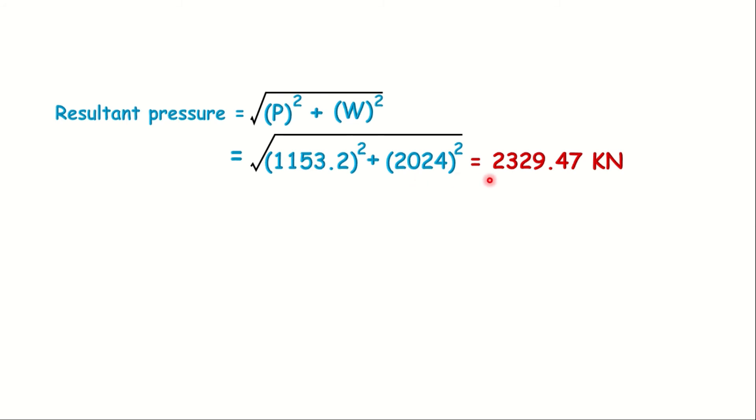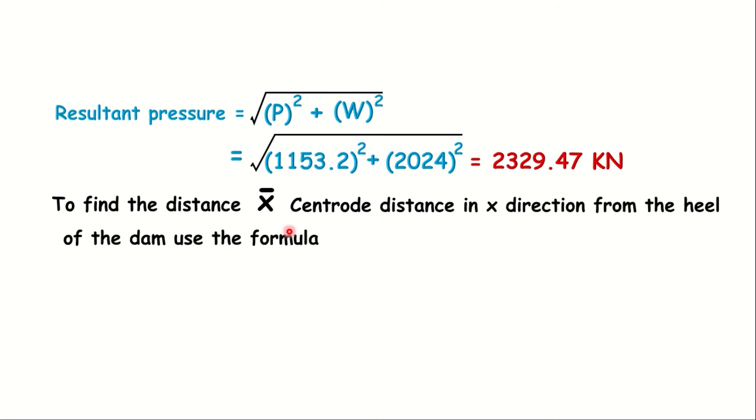To find the distance X̄, the centroid distance in x direction from the heel of the dam, use the formula: X̄ = (a² + b² + ab) / (3(a + b)).